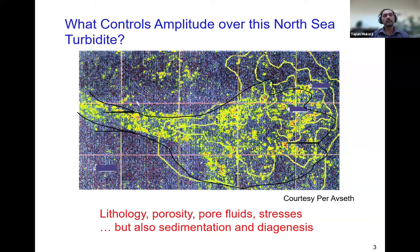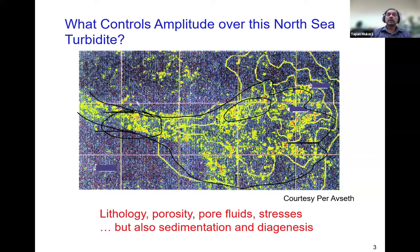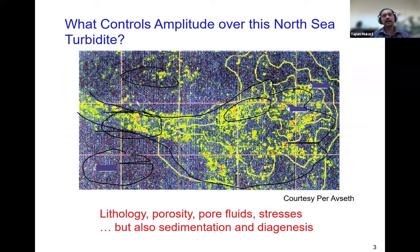We have the fans and lobes. Blue colors indicate low amplitude, yellow and red indicate high amplitudes. What controls those amplitudes? There are many different things: lithology (shale versus sand), porosity, pore fluid — whether it is brine-saturated sand or gas-saturated sand — and geologic processes of sedimentation, sorting, and diagenesis. All of those can impact these amplitudes.